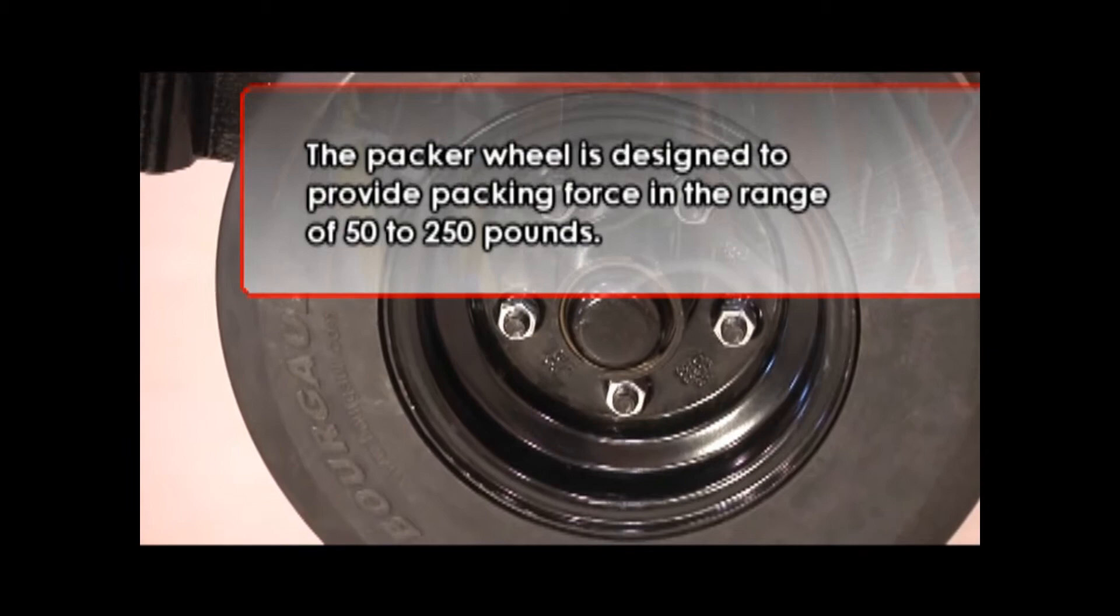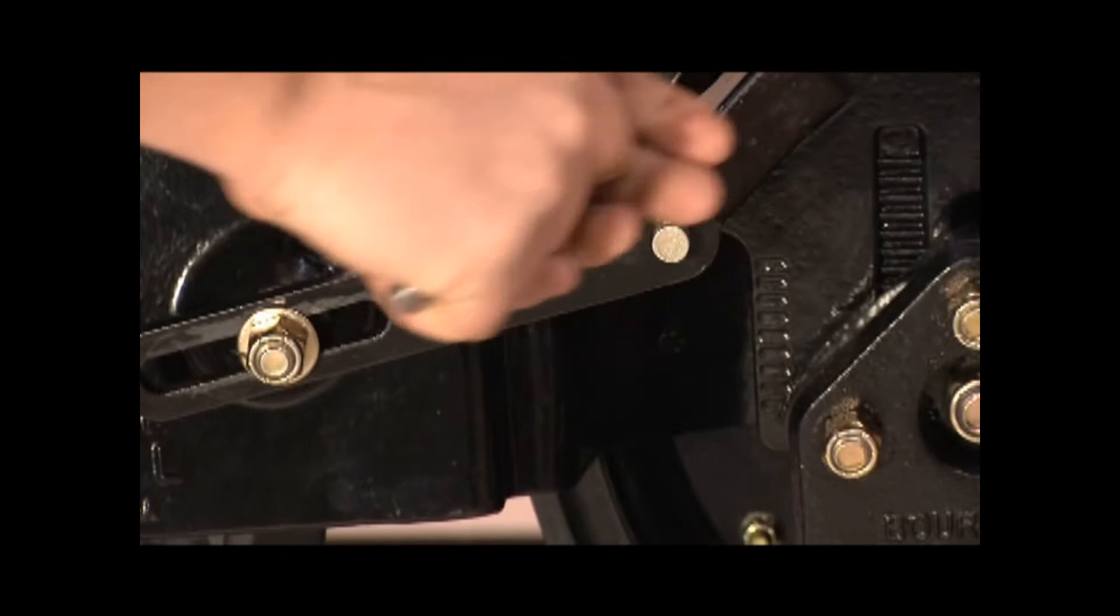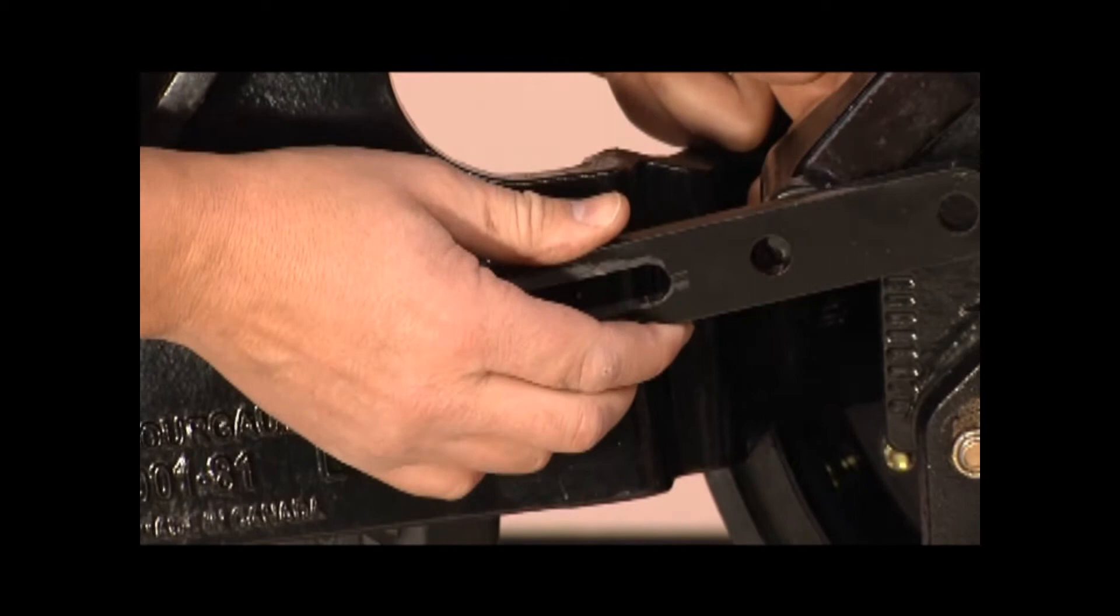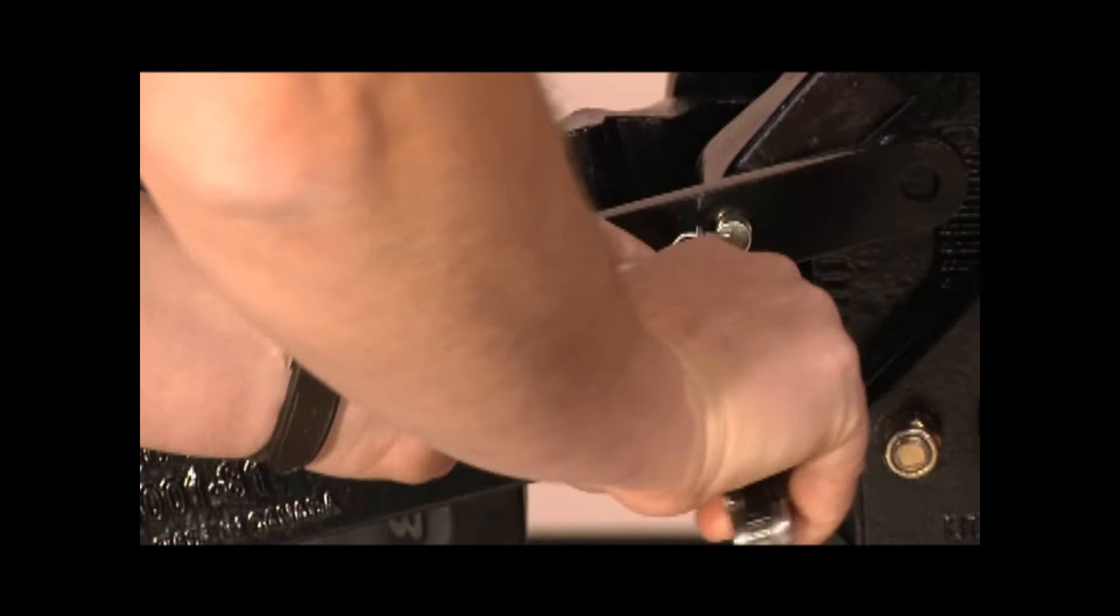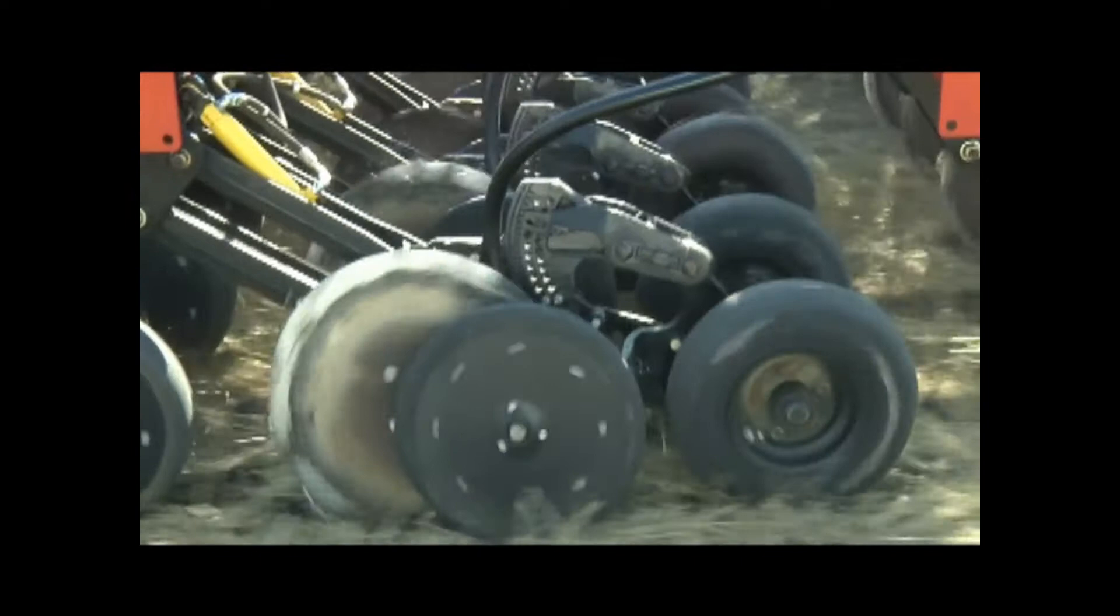The packer wheel is designed to provide packing force in the range of 50 to 250 pounds. In conditions where additional packing force is required, the cleaner wheel can be locked up so that all the force is transferred to the packer wheel. This arrangement will eliminate the walking action, so greater attention will be needed regarding seeding speed and seed bed preparation.